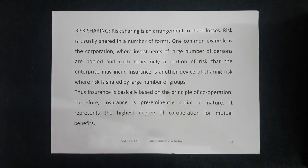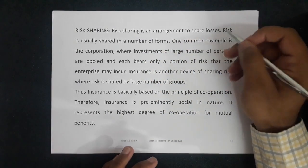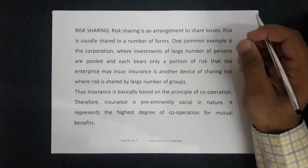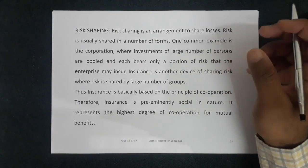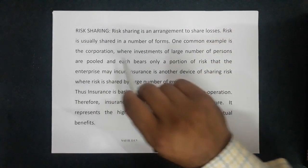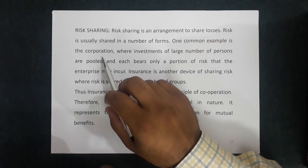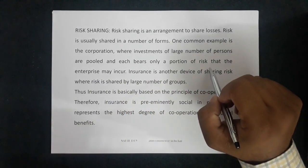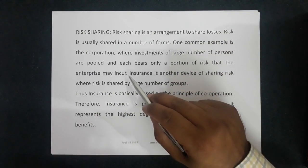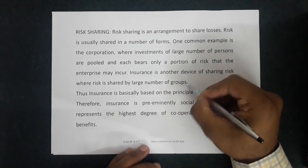The last point is risk sharing. Risk sharing is an arrangement to share losses. Insurance is such an instrument through which the loss is shared among all the members or policy holders together. Risk is usually shared in a number of forms — one common example is the corporation, i.e., the insurance company, where investments of a large number of persons are pooled and each bears only a proportion of the risk. Insurance is another device of sharing risk where risk is shared by a large number of groups.